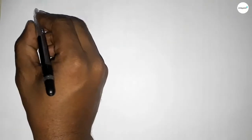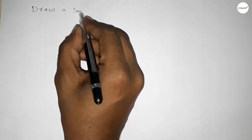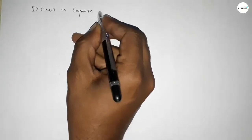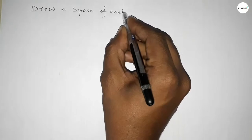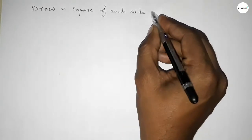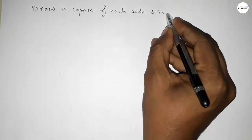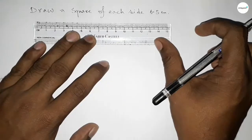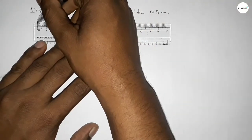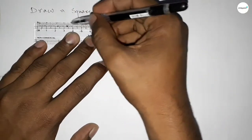Hi everyone, welcome to SSR Classes. Today in this video we have to draw a square of each side length 6.5 centimeters. So let's start the video.